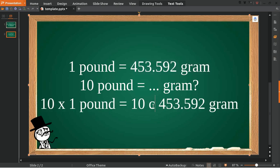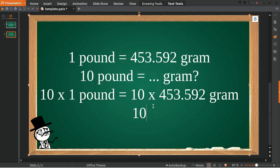Yep, and here is the result. Ten pounds is equal to 4535.92 grams.